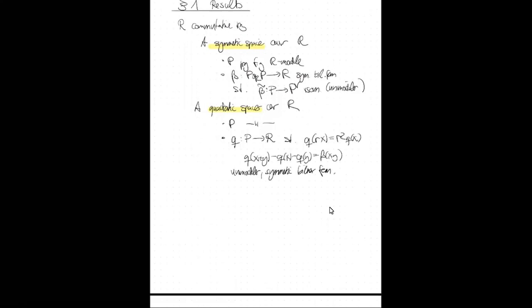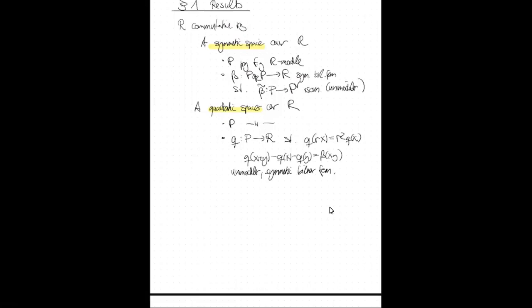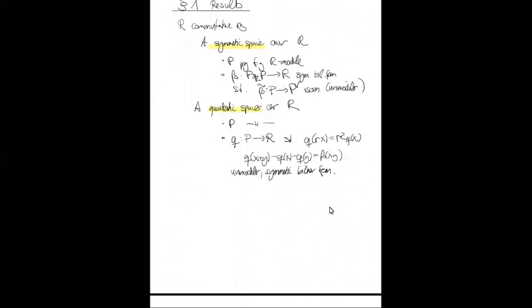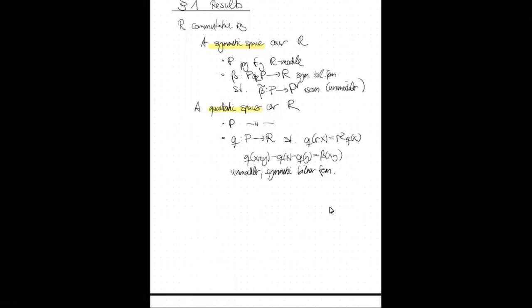Those are symmetric and quadratic spaces. By definition, every quadratic space has an underlying symmetric space given by the polarization, so a quadratic space is a refinement of a symmetric space. If 2 is a unit in your ring, you can recover the quadratic form Q from beta, so symmetric and quadratic spaces are the same when 2 is a unit.